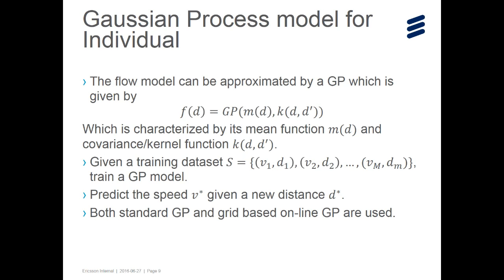The function k(d, d') is called the kernel function, which gives the correlation between two different values d and d'. Given a training dataset consisting of ground speed and distance on track pairs, we can train a Gaussian process model characterized by its mean function and covariance function. After obtaining this model, we can predict the speed of skiers given a new distance on track.